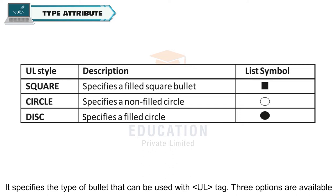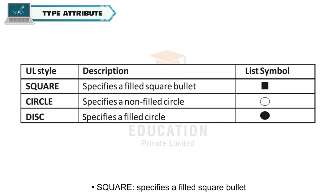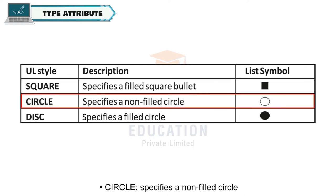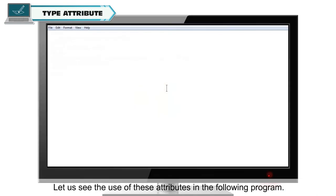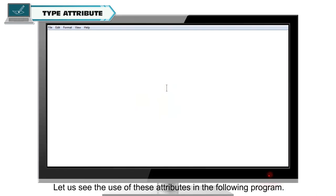Type attribute: It specifies the type of bullet that can be used with the ul tag. Three options are available — Square: specifies a filled square bullet; Circle: specifies a non-filled circle; Disc: specifies a filled circle. Let us see the use of these attributes in the following program.